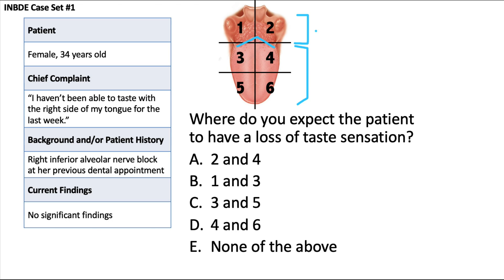The posterior one-third is innervated by one nerve — the glossopharyngeal nerve — which handles both touch and taste. A nice way to remember: the anterior two-thirds has two separate nerves, the posterior one-third has only one. Of course, there are different nerves for each side of the body, so for the patient's right side, it's the right lingual branch of the trigeminal nerve and the right chorda tympani. An inferior alveolar nerve block will often affect the lingual nerve of cranial nerve 5 as well.